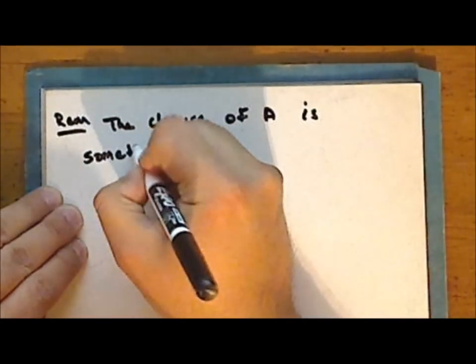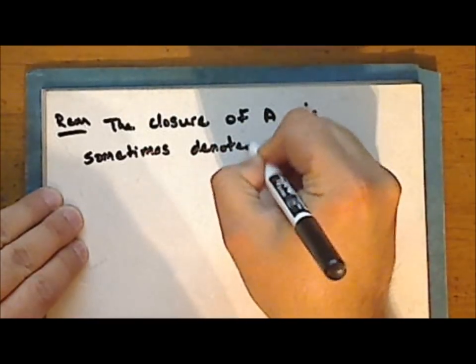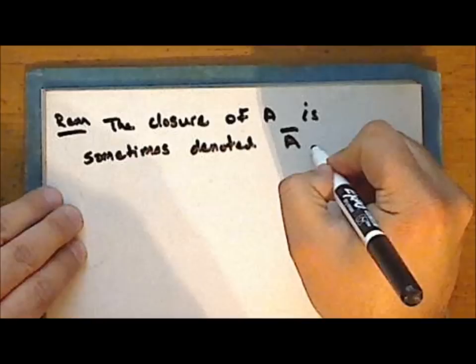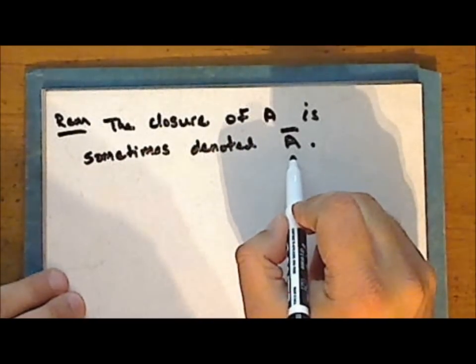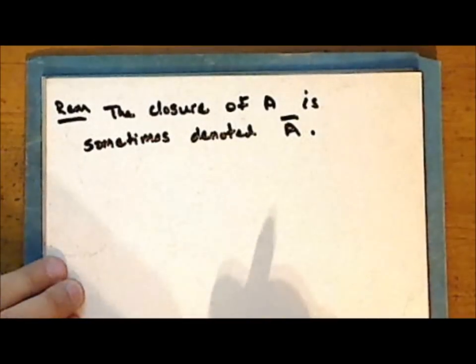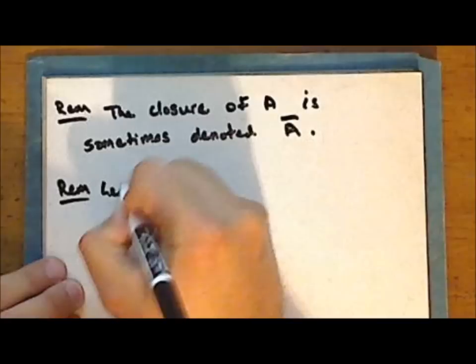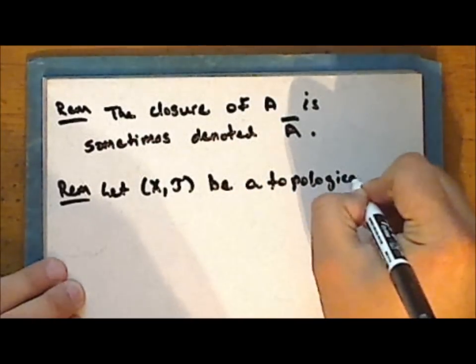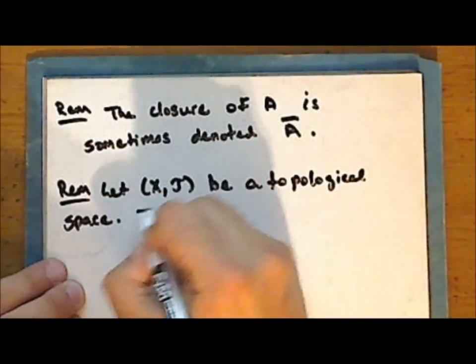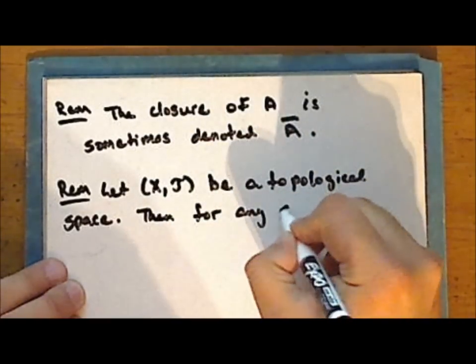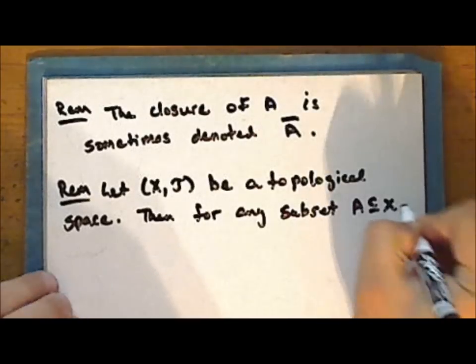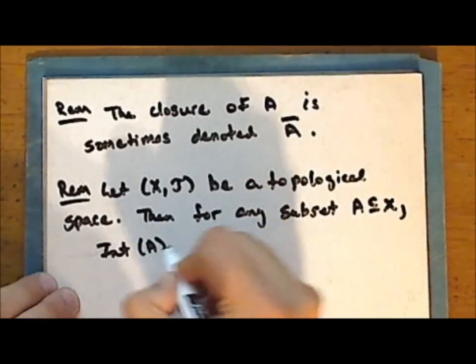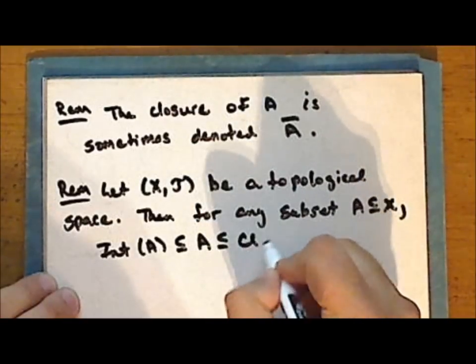The closure of A is sometimes denoted with a bar over the set A. I will reserve this symbol for the algebraic closure of the set and not the topological closure of the set. So, for any subset A in the space X, we have that the interior of A is a subset of the set A, which is itself a subset of the closure of the set A.